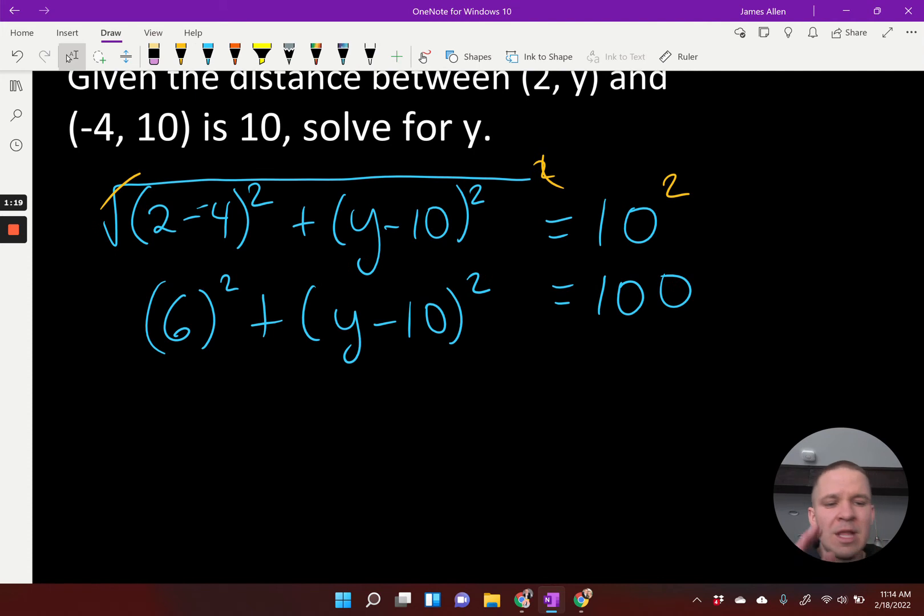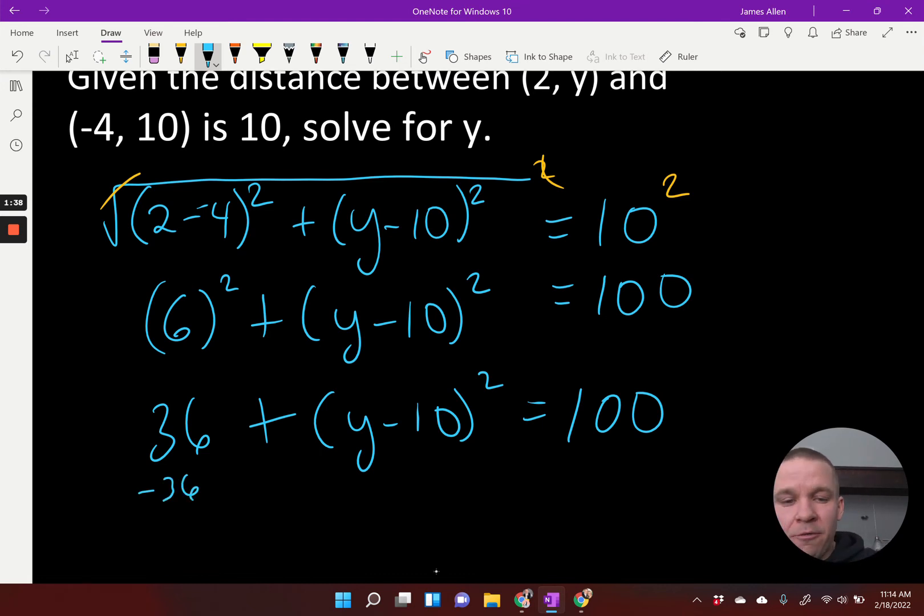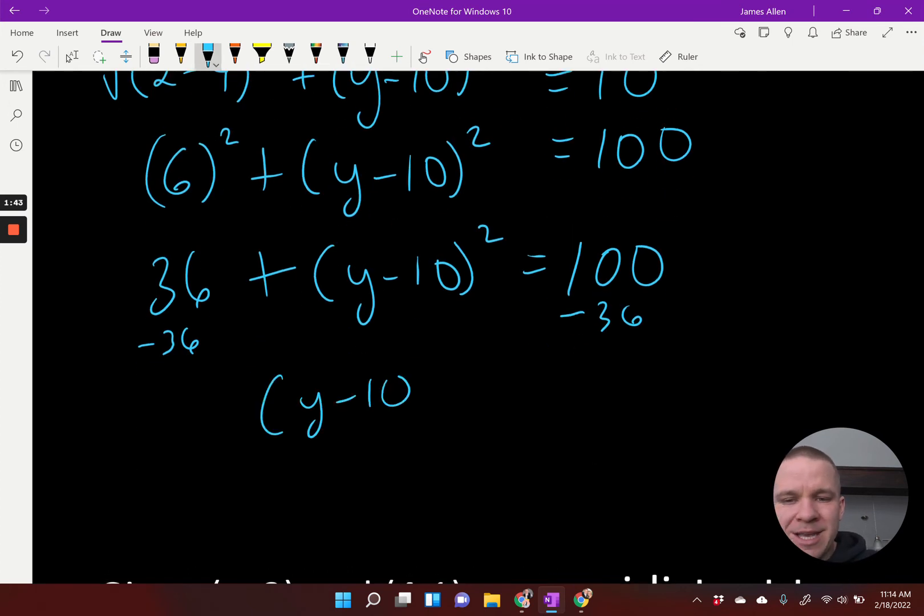Now we have a choice. First I get 36 here. I can either foil that out, y minus 10 times y minus 10 and foil, or I can do something different, and I'm going to do something different. Since I have a whole binomial squared, if I were to isolate that by subtracting 36 from both sides, I would end up with (y - 10) squared equals 64.